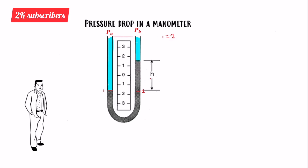We introduce another height, R, for the distance between two other reference levels. The height of fluid A at point one is therefore R plus H. We have pressure PA acting on fluid A and pressure PB acting on fluid B.